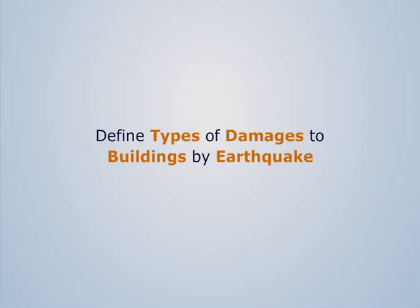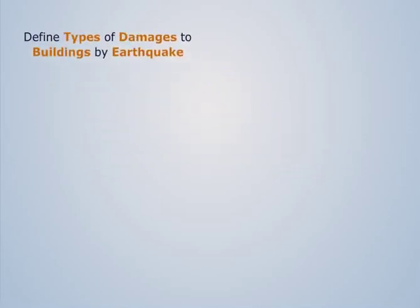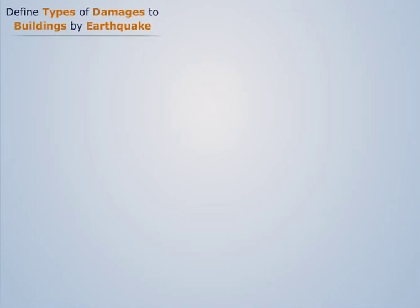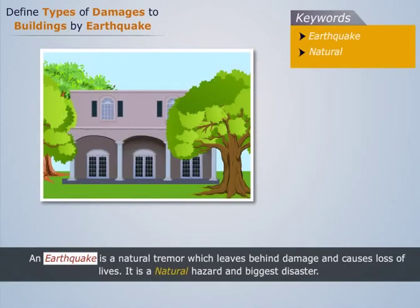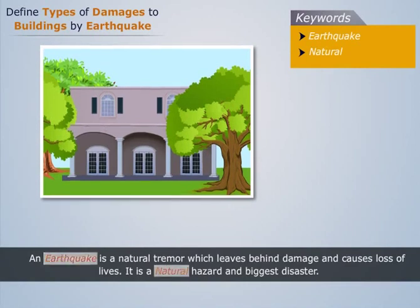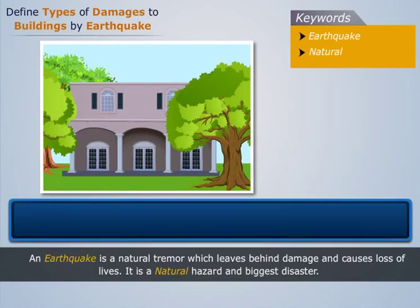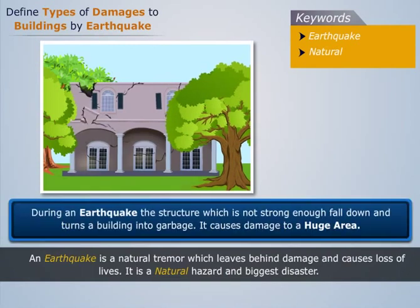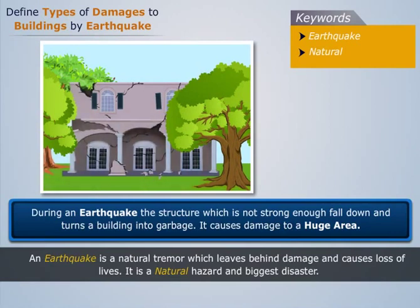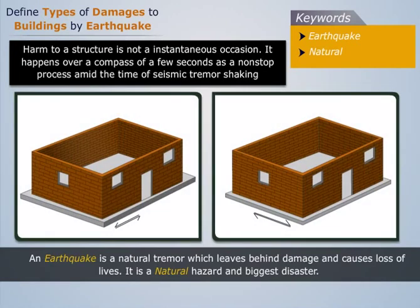Define types of damages to buildings by earthquake. An earthquake is a natural tremor which leaves behind damage and causes losses of lives. It is a natural hazard and biggest disaster. During an earthquake, the structure which is not strong enough falls down and turns a building into garbage, causing damage to a huge area.